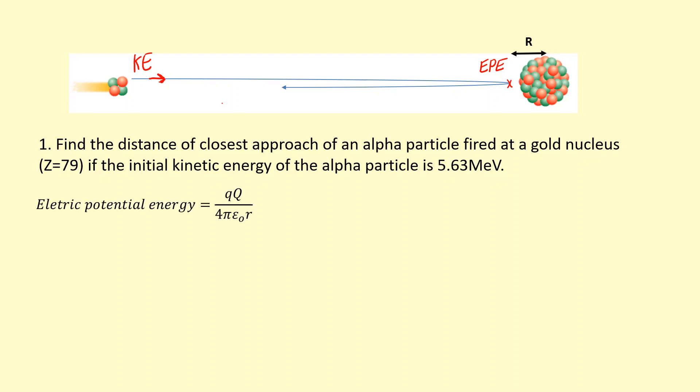Now electric potential energy, here's the equation for it. Q times Q over 4 pi epsilon r squared. The Q's stand for charge. So the first Q is the charge of the alpha particle, which is plus 2 times 1.610 to the power of minus 19. And the second Q is the charge of the gold nucleus, which has an atomic number of 79.